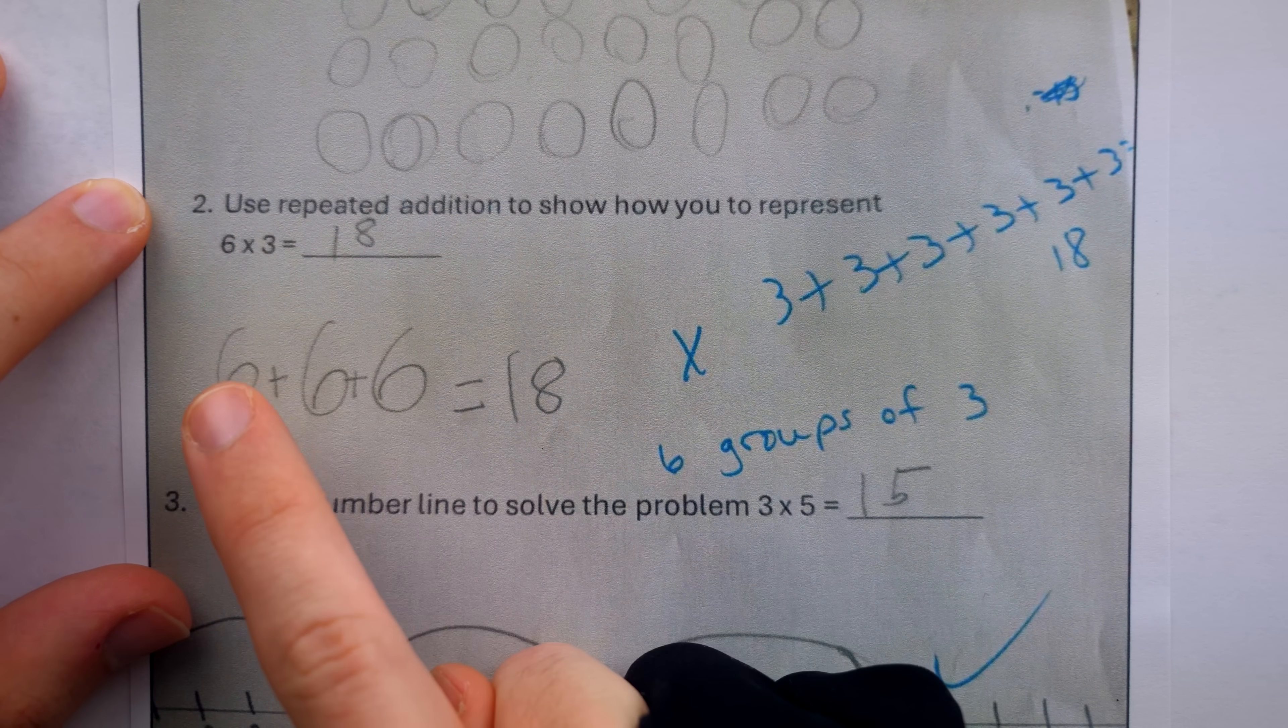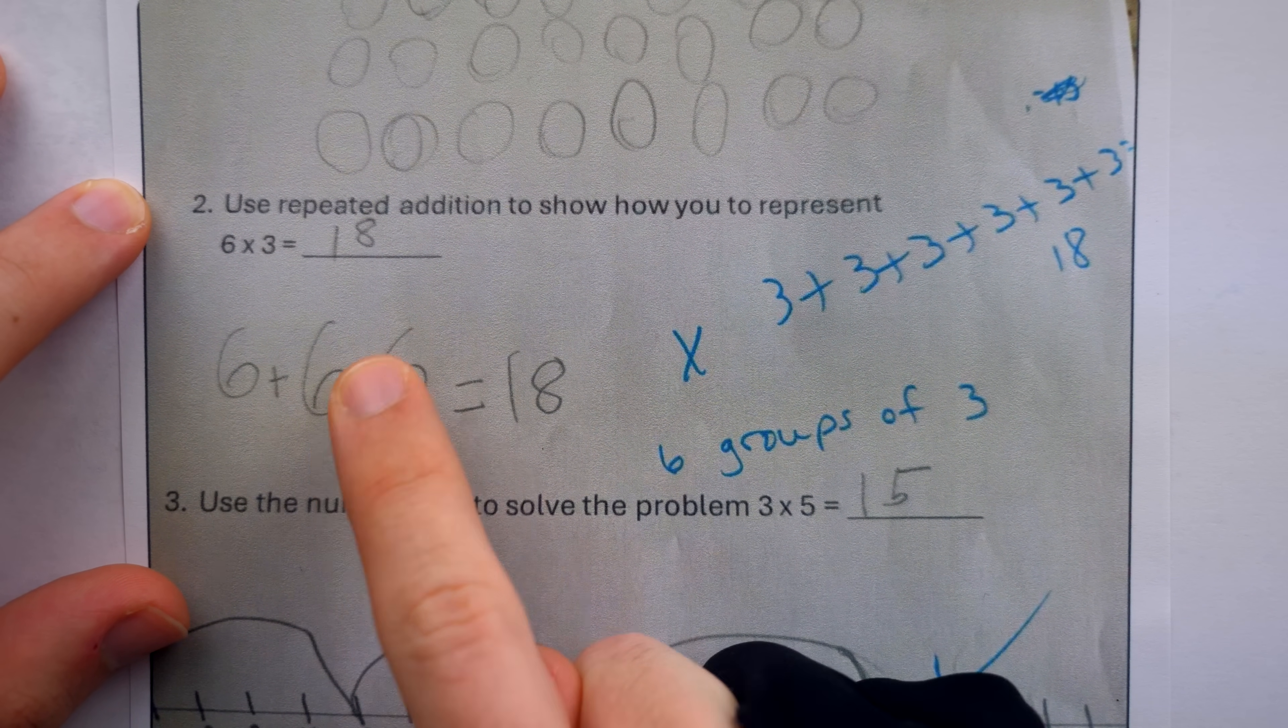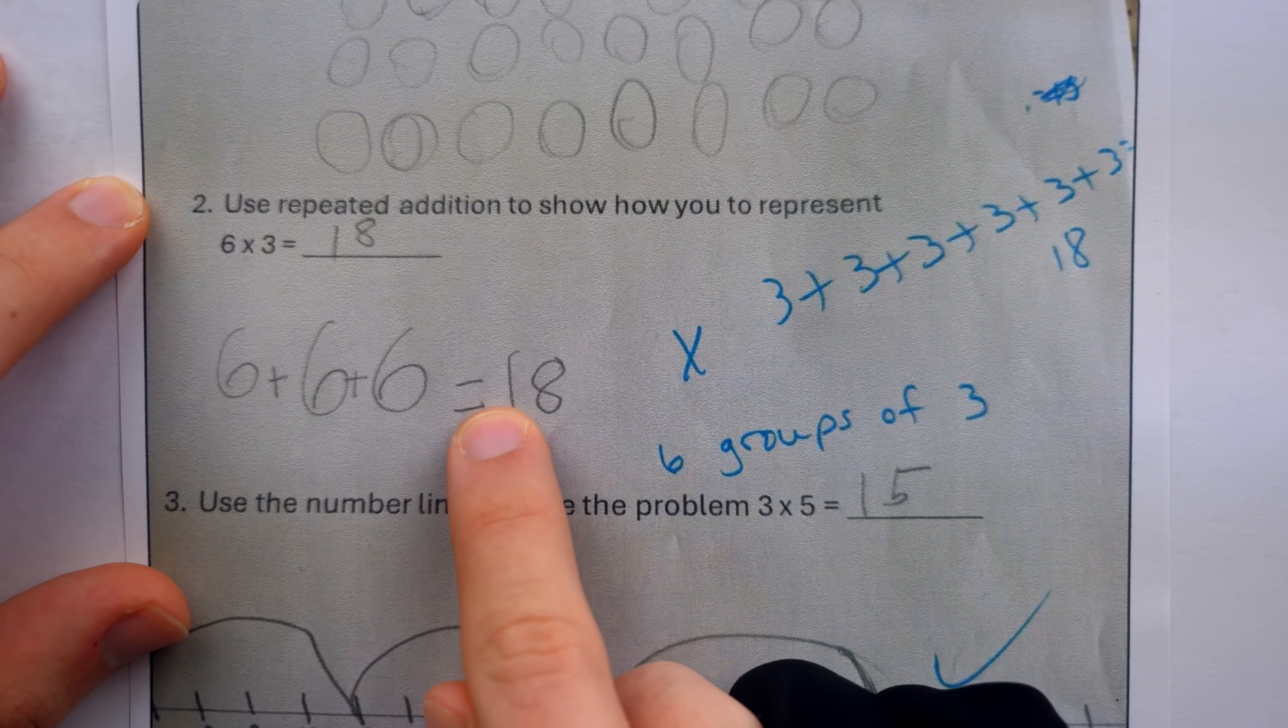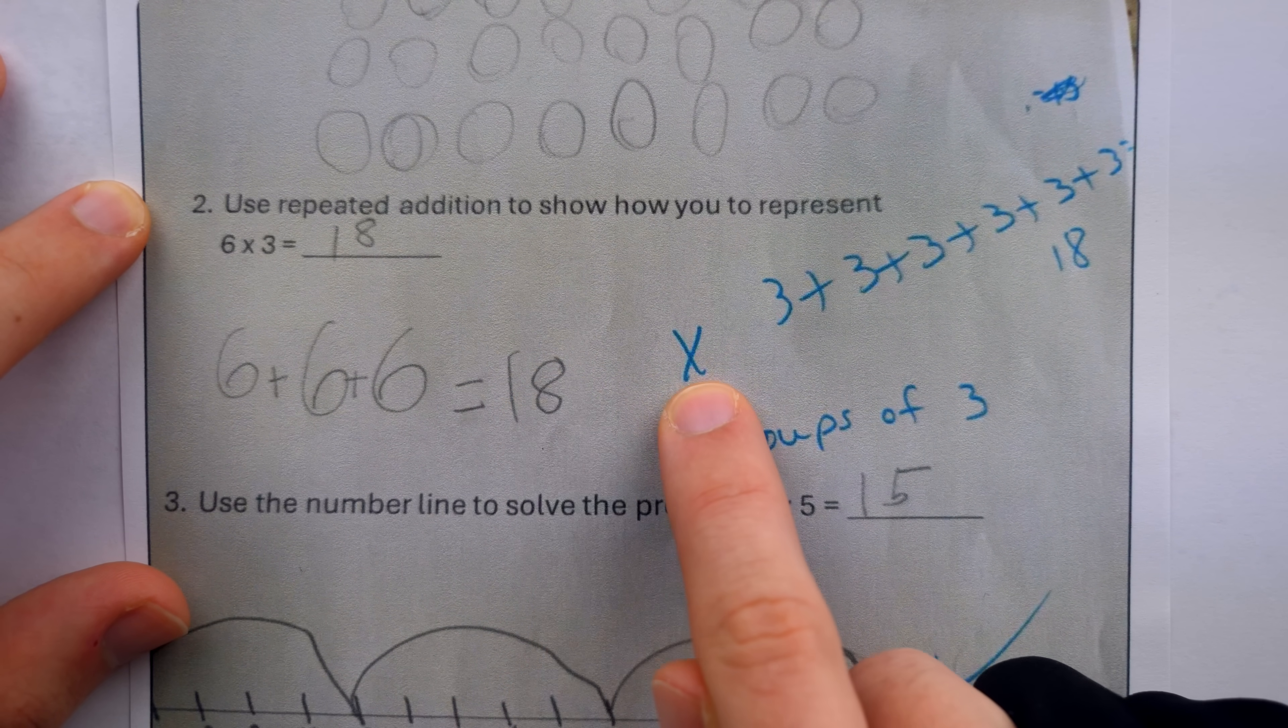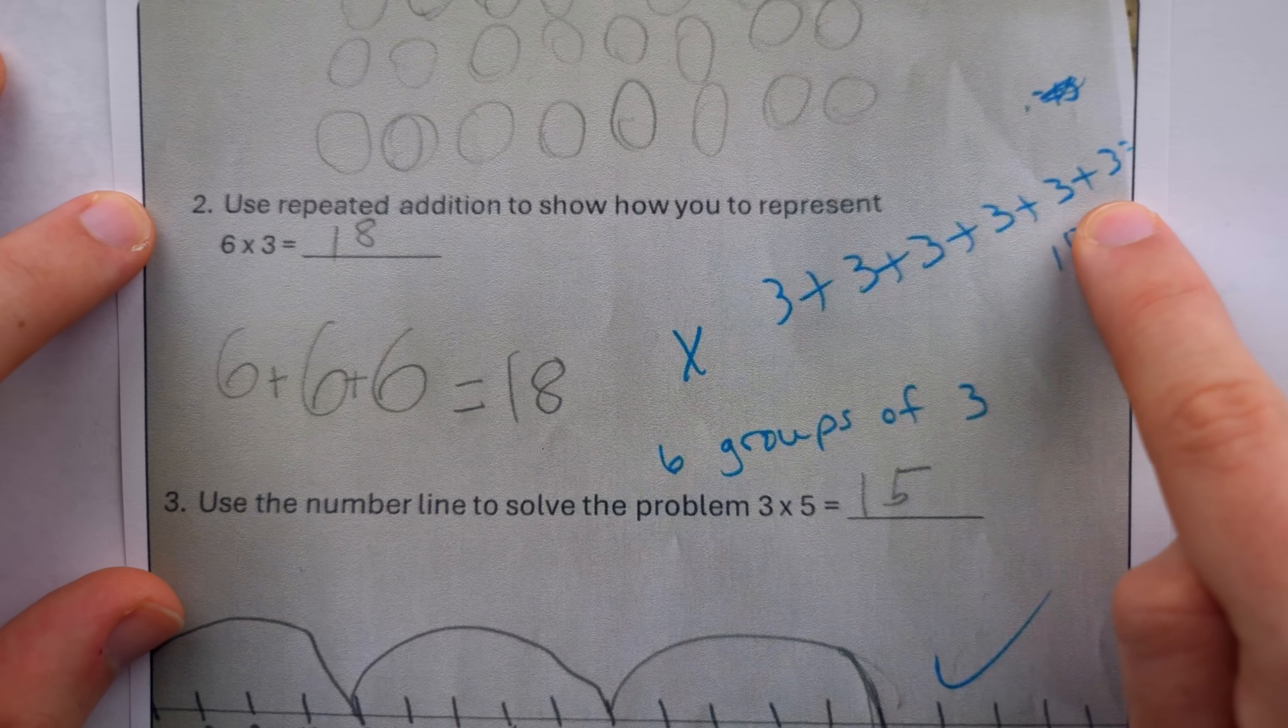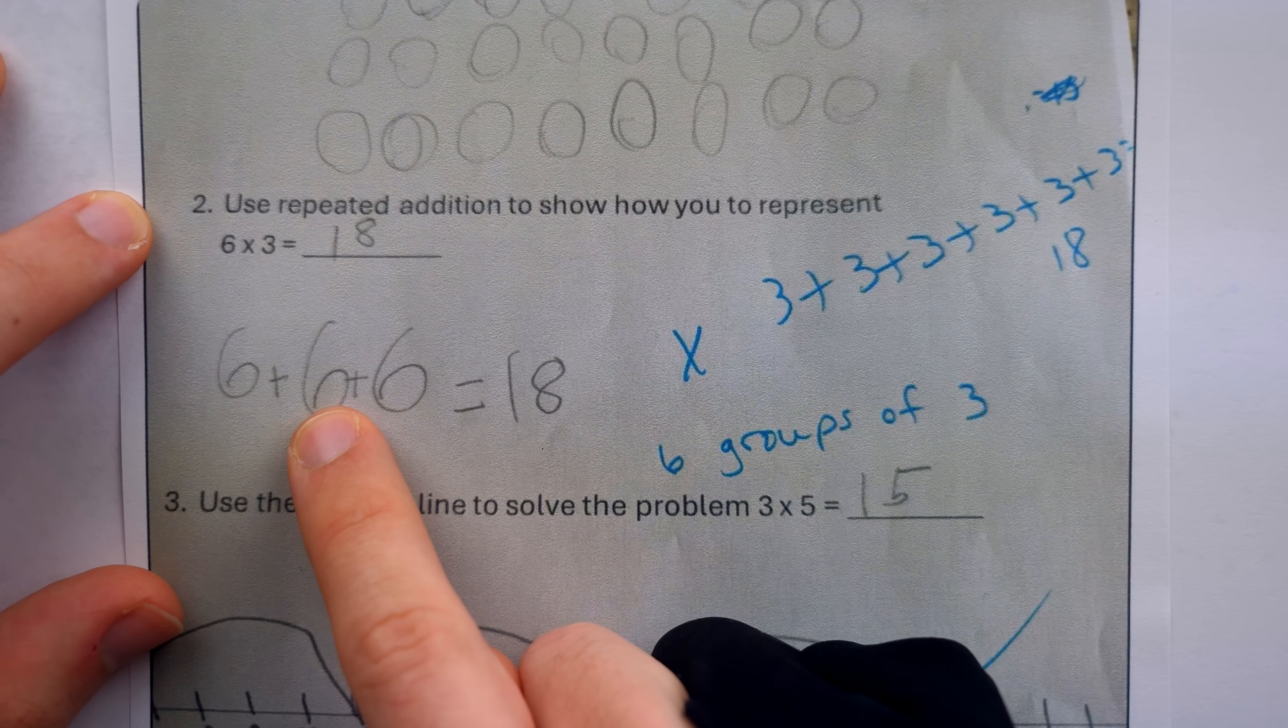The child used repeated addition, 6 plus 6 plus 6, to show how they represent 6 times 3, of course getting 18. The teacher seemingly gave no credit and said it's supposed to be 3 plus 3 plus 3, 6 times, not 6 plus 6 plus 6, 3 times.